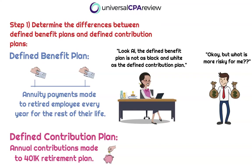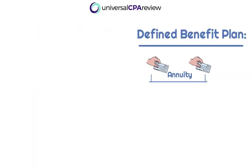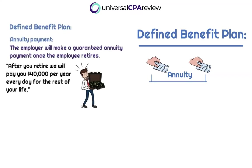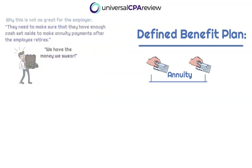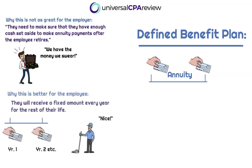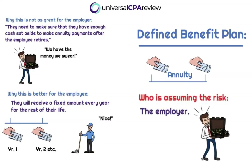The reason the defined benefit plan requires the company to assume more risk is because instead of just making contributions to Jay the janitor's retirement plan, a defined benefit plan can be thought of as making an annuity payment. Once Jay the janitor retires, he's going to be collecting these annuity payments every single year for the rest of his life. Altruistic Al would say, 'After you retire, we're going to pay you $40,000 per year for the rest of your life.' This is not as great for the employer because they need to make this annuity payment every single year and must ensure they have enough cash. But it's better for the employee because they have that guaranteed fixed amount once they retire — that is why the employer assumes the risk.